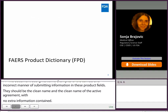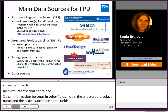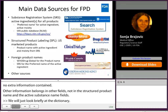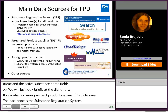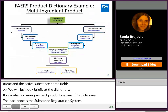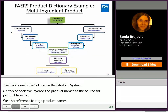Let's look briefly at the FAERS product dictionary. It is an internal dictionary — we validate incoming suspect products against this dictionary. The backbone is the substance registration system. On top of that, we layer the product names as sourced from the structured product labeling, and we also reference Hudra Global for foreign product names. The dictionary then captures that clean dictionary product name from SPL, the active ingredient, and moiety from SRS. That's what we validate your reports against.